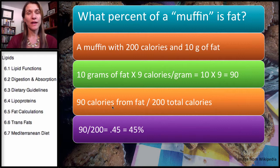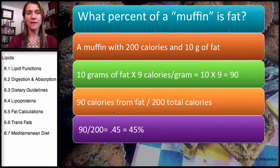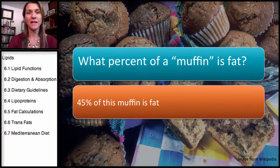Now, of those 90 calories, we know that they're all fat. But we also know that there are 200 calories in this muffin. So if we simply divide the 90 by 200, we can get a percentage. That is 90 divided by 200 equals 0.45, which equals 45 percent. So that tells us that 45 percent of this muffin is fat.